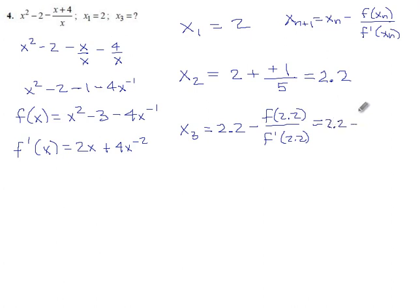So we have 2.2 minus 0.021818—that's six decimal places. And now I take 2.2 and put it into the derivative, so 2 times 2.2 times 2.2—I shouldn't have needed to calculate that, that's a little embarrassing—and then plus 4 divided by 2.2 squared.